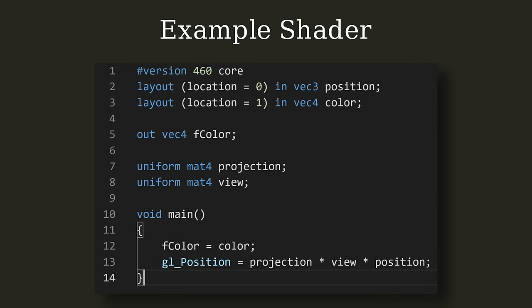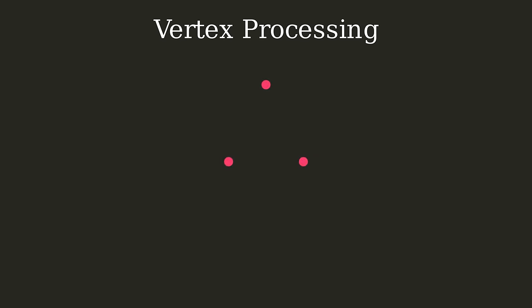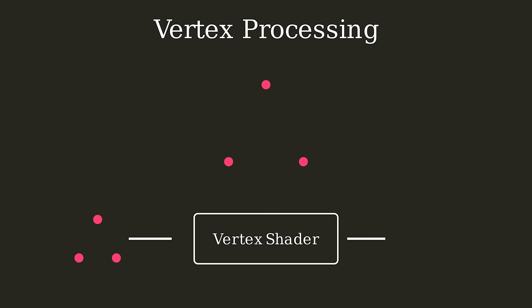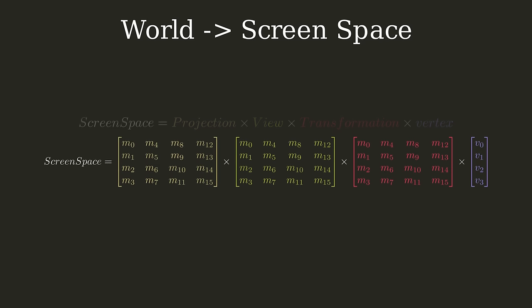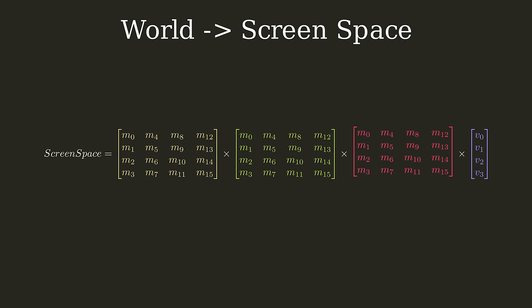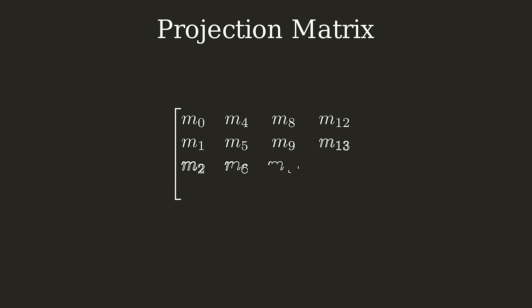The vertex shader is where we perform mathematical calculations to transform these vertices from world space to 2D screen space. If you're familiar with linear algebra this should be fairly intuitive, but you don't need to understand the details to understand how the overall process works. The way we transform vertices from world space to screen space is typically through a series of matrix math. The programmer will typically pass in the object's transformation matrix, a projection matrix, and a view matrix, and then multiply all these together with the object's model data to transform the data into 2D screen space. This is great, but it's absolute nonsense if you don't know what any of these terms mean — what's a transformation matrix, a projection matrix, and what the heck is a view matrix?